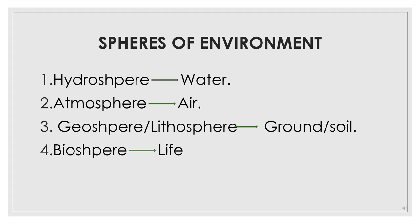Students, the environment consists of four spheres: hydrosphere, atmosphere, lithosphere or geosphere, and biosphere. The names of each sphere come from Greek words that describe what they are made of. Hydro stands for water, atmo for air, geo for ground or soil, and bio for life.